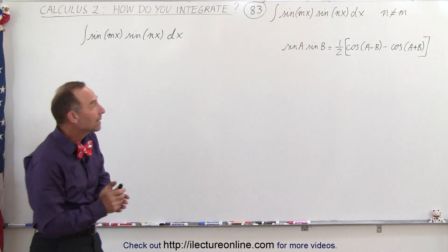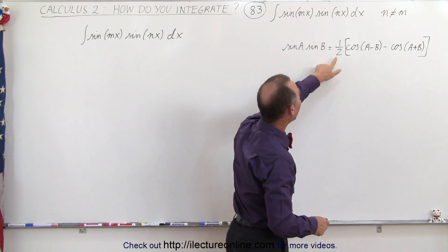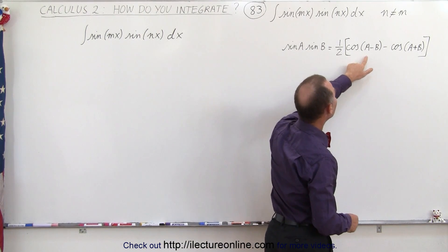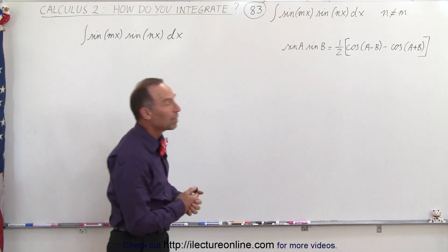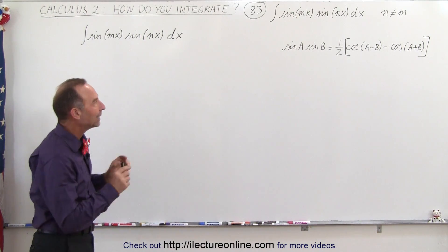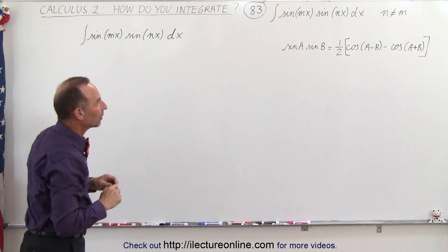We're going to need the identity where we have sine of a times sine of b, which is equal to one-half times the cosine of a minus b minus the cosine of a plus b. Using that identity, we're going to replace this integral by what it will look like when we use that identity.